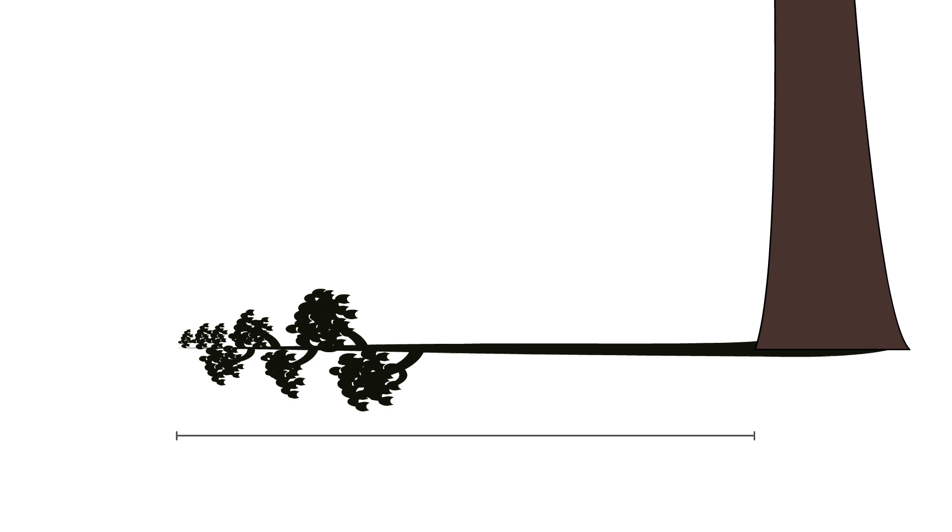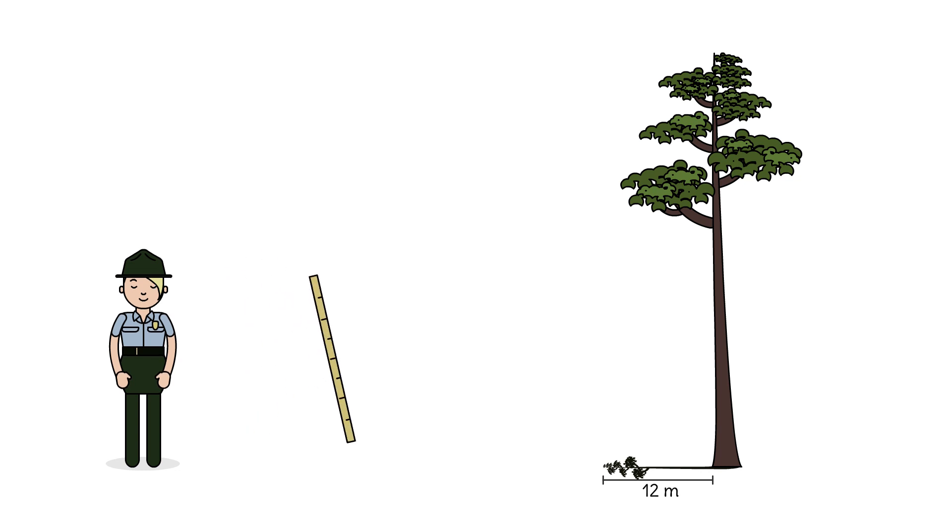Macy measures the length of the shadow of the tree. The tree's shadow is 12 meters long. Then Macy sticks her walking stick straight in the ground and marks where its shadow ends. She measures this distance, 0.4 meters.